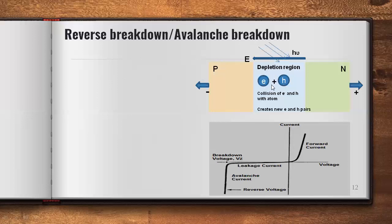Because of the high electric field, the electron-hole pairs gain more velocity and accelerate, colliding with the atoms of the depletion region and releasing electrons from atoms. Electrons move from the valence band to the conduction band, creating new electron-hole pairs. Looking at the current-voltage characteristics, initially up to a particular voltage there is a small leakage current due to minority charge carriers. As the voltage reaches a certain level, the number of charge carriers keeps increasing due to creation of more electron-hole pairs, causing the current to drastically change. That voltage is called the breakdown voltage, and this condition is called avalanche breakdown.